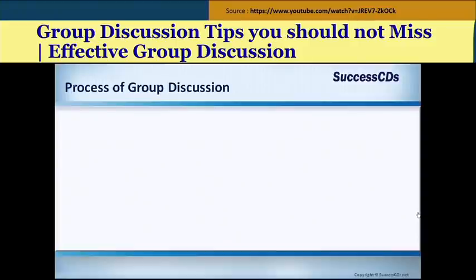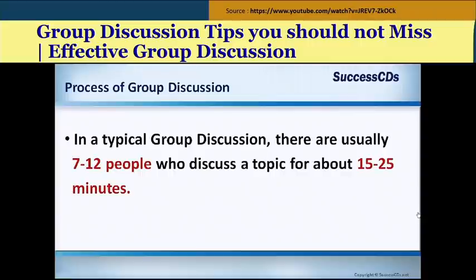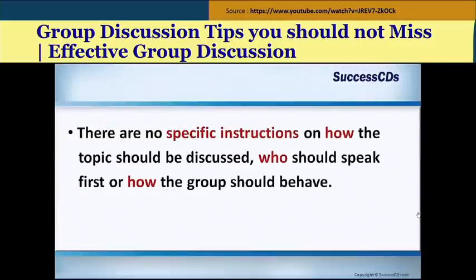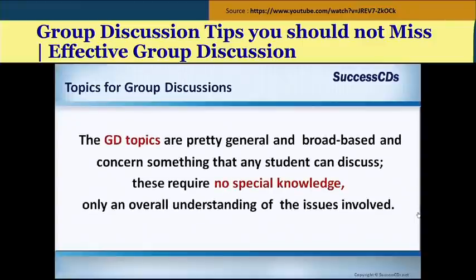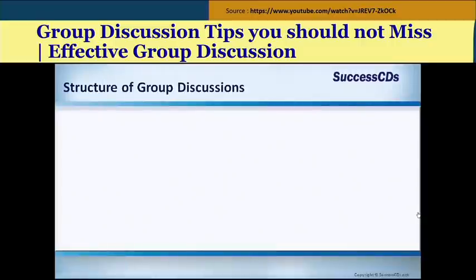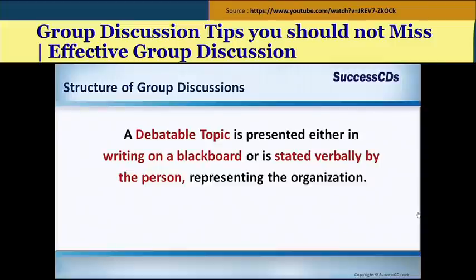In a typical group discussion, there are usually 7 to 12 people who discuss a topic for about 15 to 25 minutes. There are no specific instructions on how the topic should be discussed, who should speak first, or how the group should behave. GD topics are broad-based and concern something any student can discuss — they require no special knowledge, only an overall understanding of the issues. A debatable topic is presented either in writing on a blackboard or stated verbally by the moderator representing the organization.